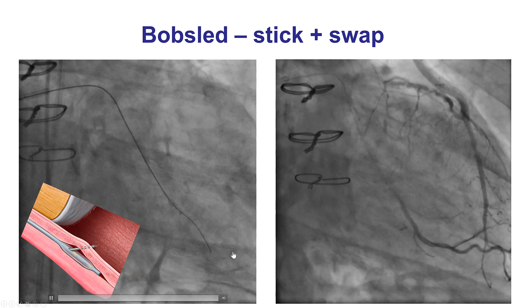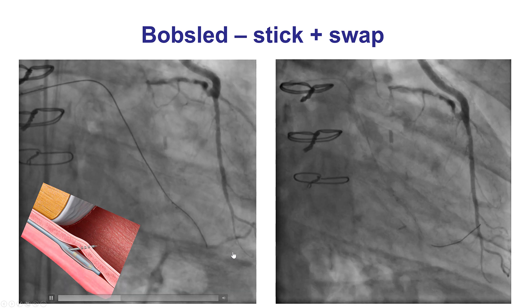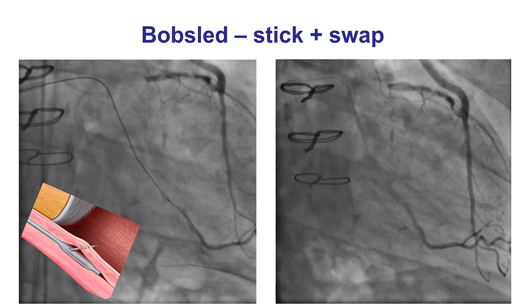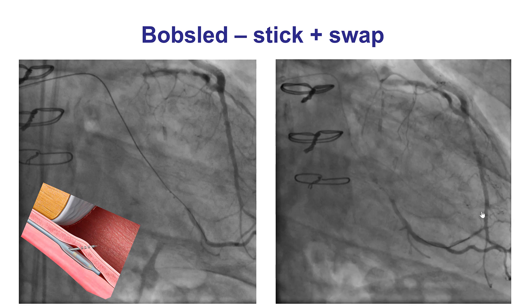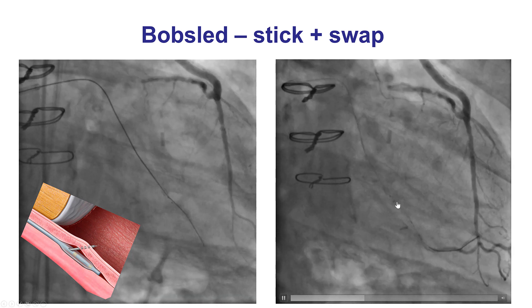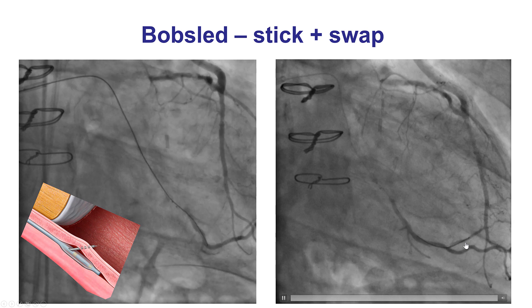Dual injection and dual projections are very important for confirming wire position, because sometimes the wire can be in a subintimal course that is not appreciated if only one projection is performed.